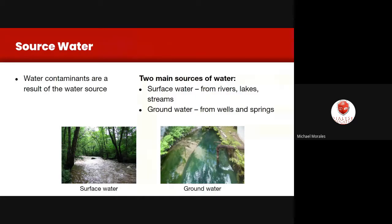Water usually comes from one of two types of sources: surface water or groundwater. When you pay your water bill, the company gets the water from somewhere — a river, an aqueduct, a lake, a reservoir, a spring, an underground water table, or a well.